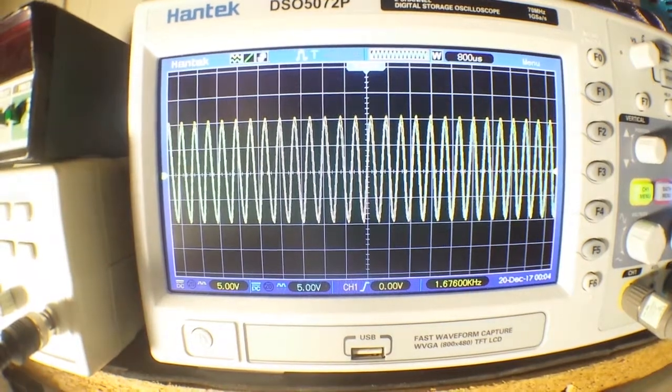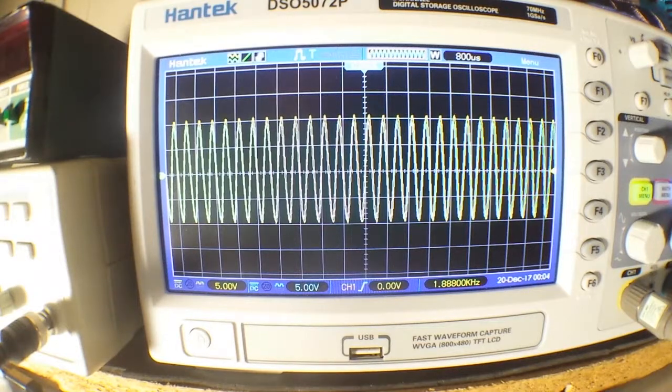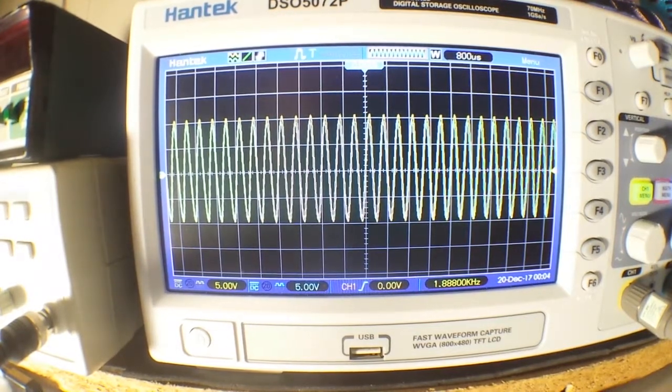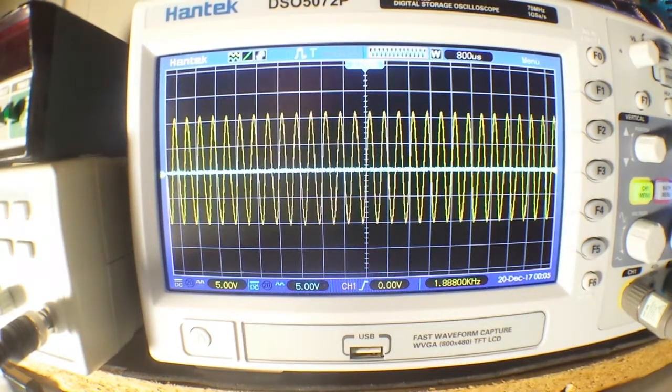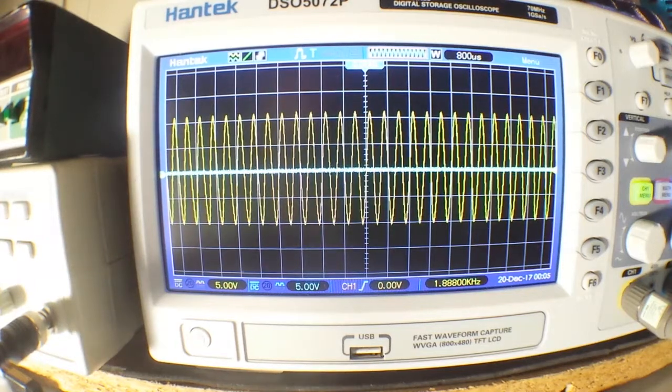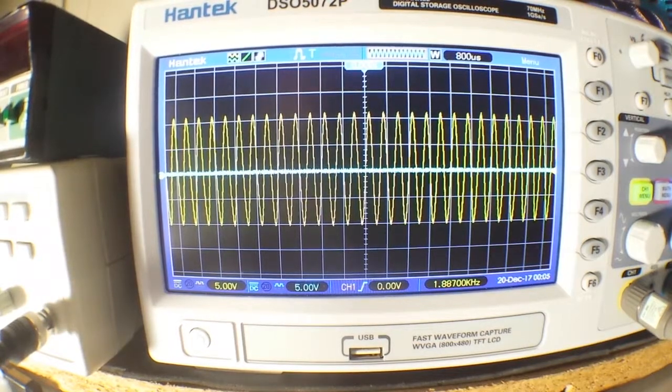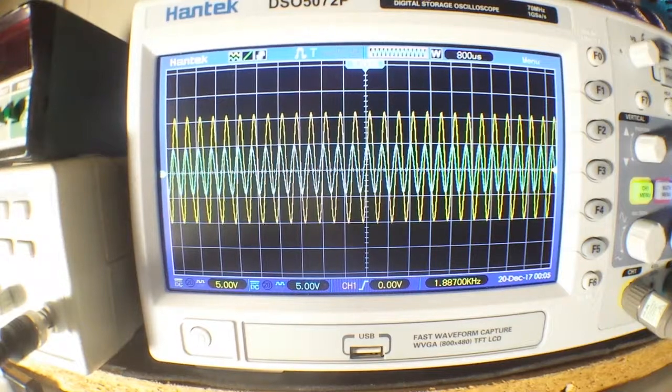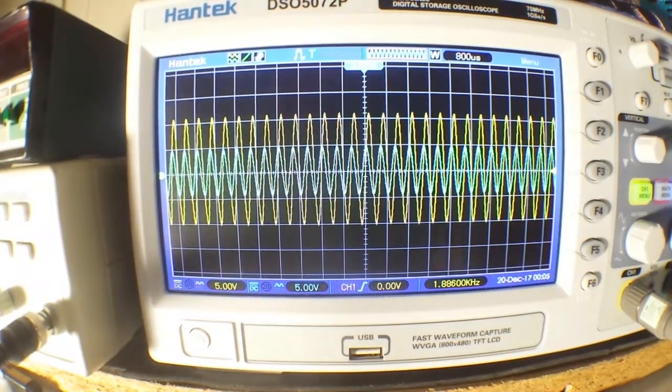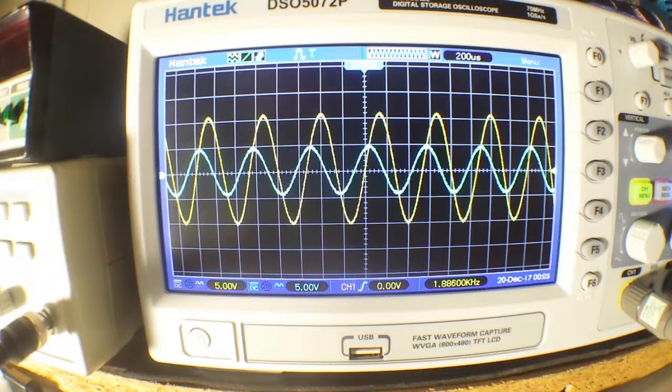So let's come back up here to 1.8 kilohertz and what I'm going to do is I'm going to pull out that 220 nano capacitor and I'm going to put in its place a 64 nano capacitor and we'll see what kind of difference that makes for our frequency response. Okay it's in and now you can see we have major attenuation at our 1.88 kilohertz.